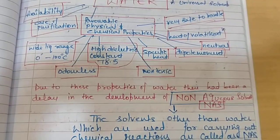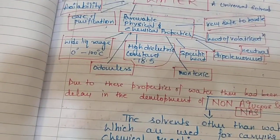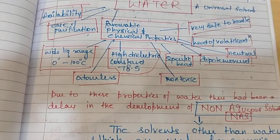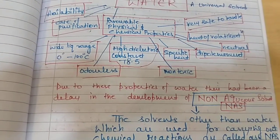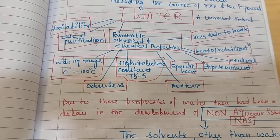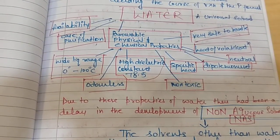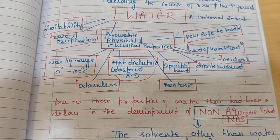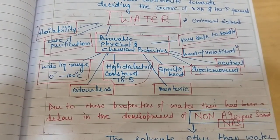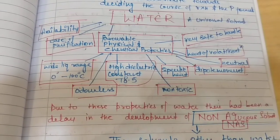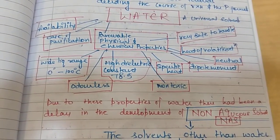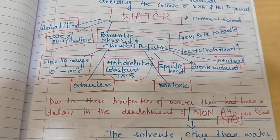Due to these excellent properties of water, there had been a delay in the development of non-aqueous solvents, because water was used universally and it didn't give scientists time or reason to think they needed any other solvent. So there was a delay in the discovery of other solvents which can be used instead of water or which can sometimes perform better than water.